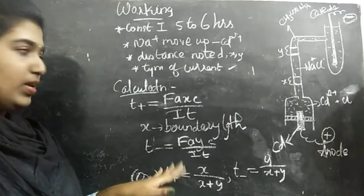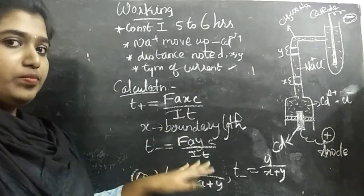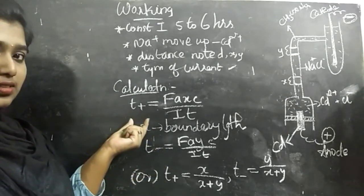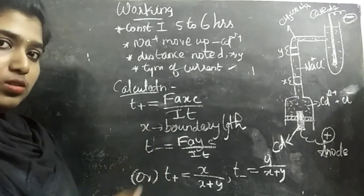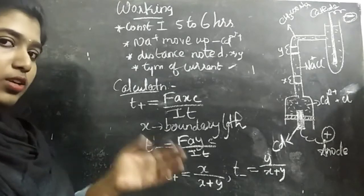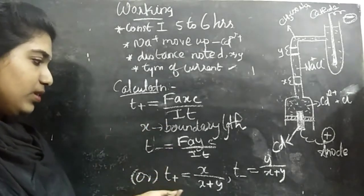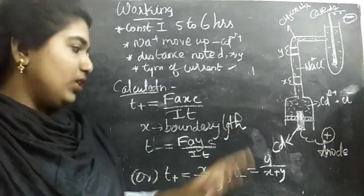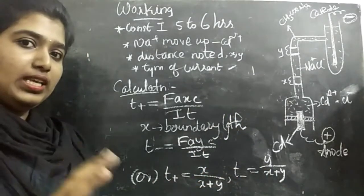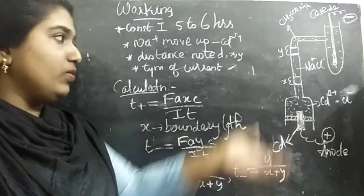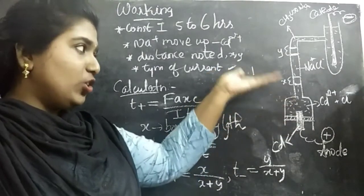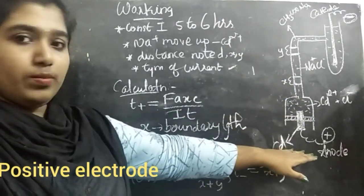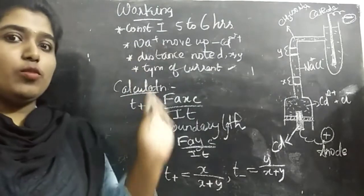X is the boundary that I said before. For T-, we can say instead of this x, we will say y. This is for Cl- in this case, and this is for Na+ in this particular example. Also we can say in other terms, only using x and y. That is T+ will be equal to x by x plus y, and T- is y by x plus y. Here we are calculating only the rate of movement of this boundary or rate of movement of that particular ion. Na+ moves away from this positive. This is the moving boundary method.